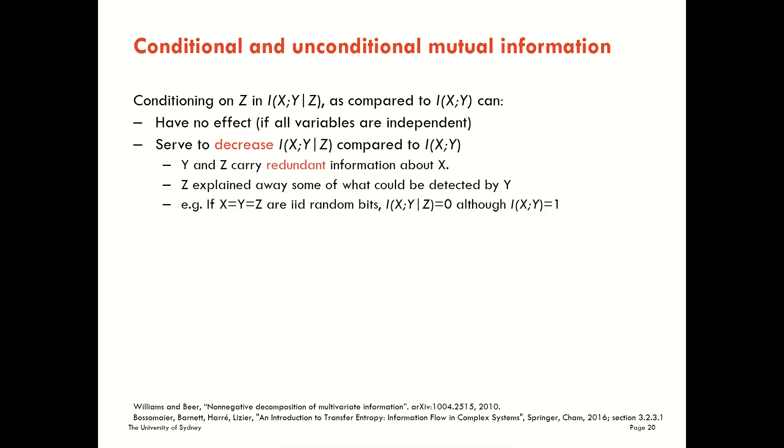On the other hand, the conditioning on Z could actually serve to decrease the conditional mutual information in comparison to the mutual information itself. This can happen where Y and Z carry what we call redundant information about X. That means that Z has already explained away some of what could have been detected by Y about X.